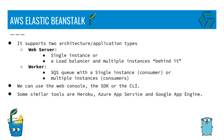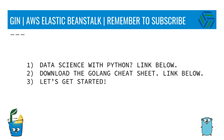In order to set up Elastic Beanstalk, we can use the web console, the SDK, or the CLI. Some similar tools are Heroku, Azure App Service, and Google App Engine.